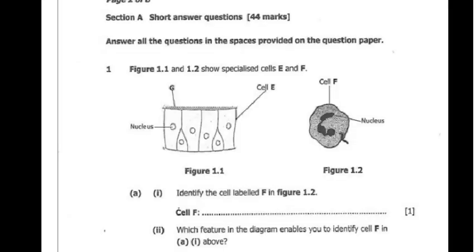Section A, short answer questions have 44 marks. They're supposed to answer all the questions in the spaces provided on the question paper. So, question 1 says,